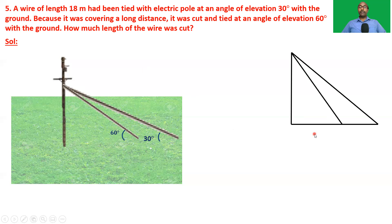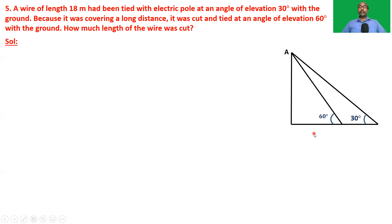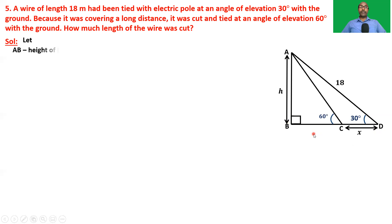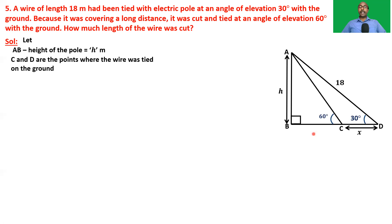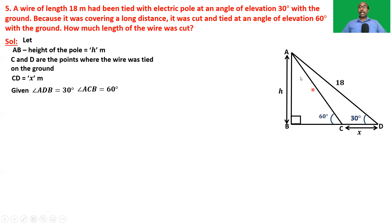Here is the figure with points A, B, C, D. The original wire length is 18 meters. Let the distance CD = x and AB = h. The angle at B is 90 degrees. Let AB be the height of the pole = h meters. C and D are the points where the wire was tied on the ground. CD is taken as x meters. Given: angle ADB = 30 degrees, angle ACB = 60 degrees, and AD = 18 meters.